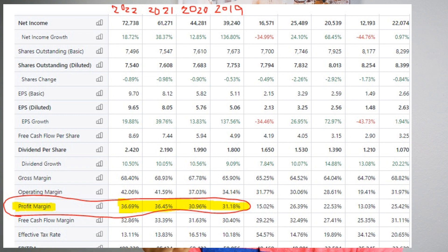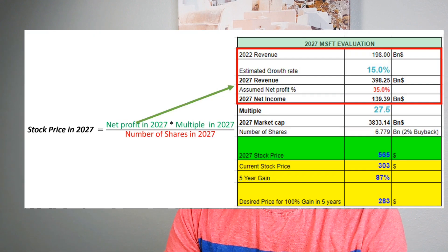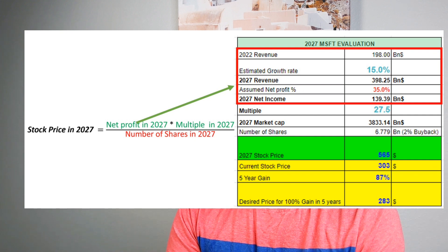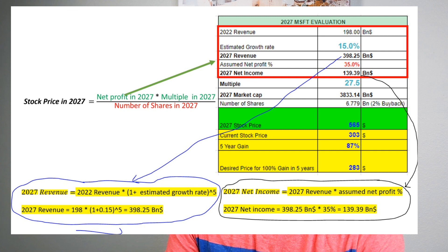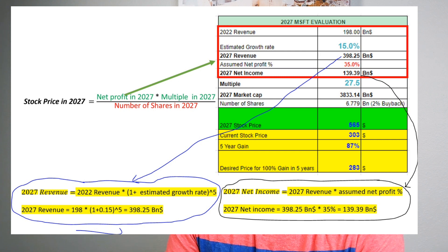To get confidence in that number you also need to understand the business model, but I'm going to focus on past performance. Microsoft has a huge moat and is the go-to company for most B2B products, so I'll keep the net profit margin at 35%. The 2027 net income is calculated by multiplying 2027 revenue by the assumed net profit margin: $398 billion times 35% gives about $139 billion. That is the first number I need for the formula.